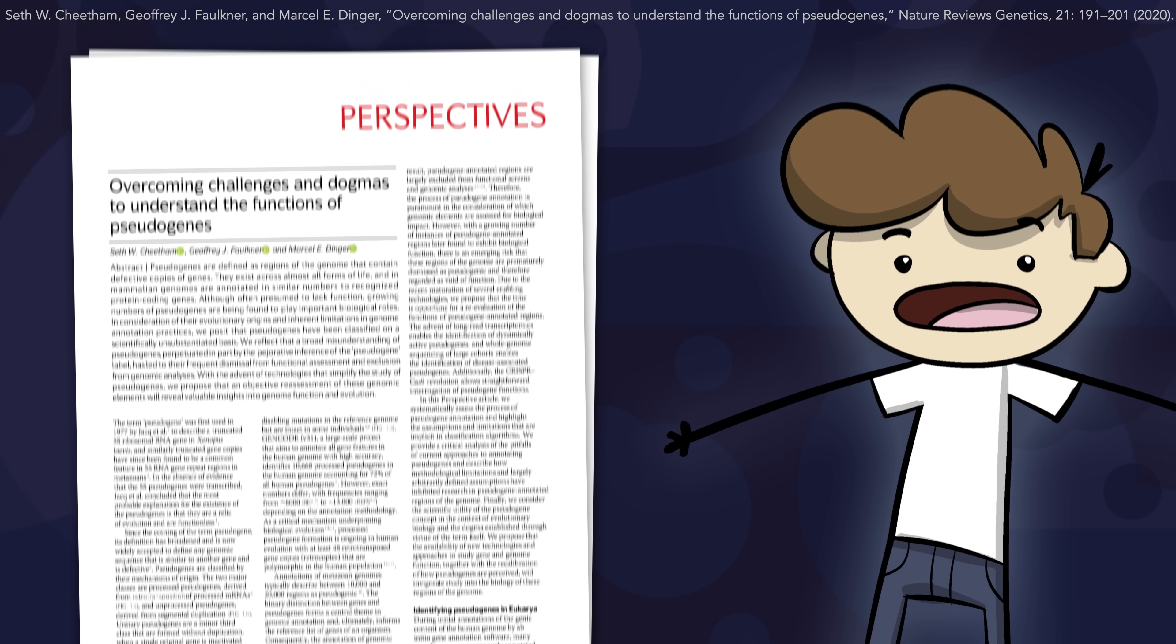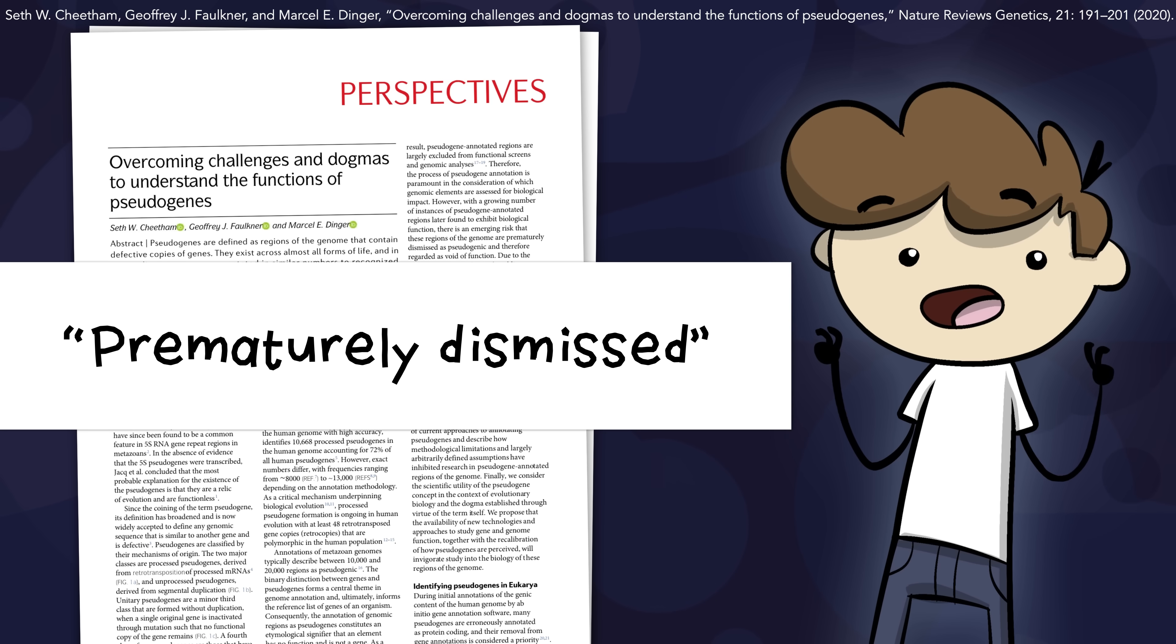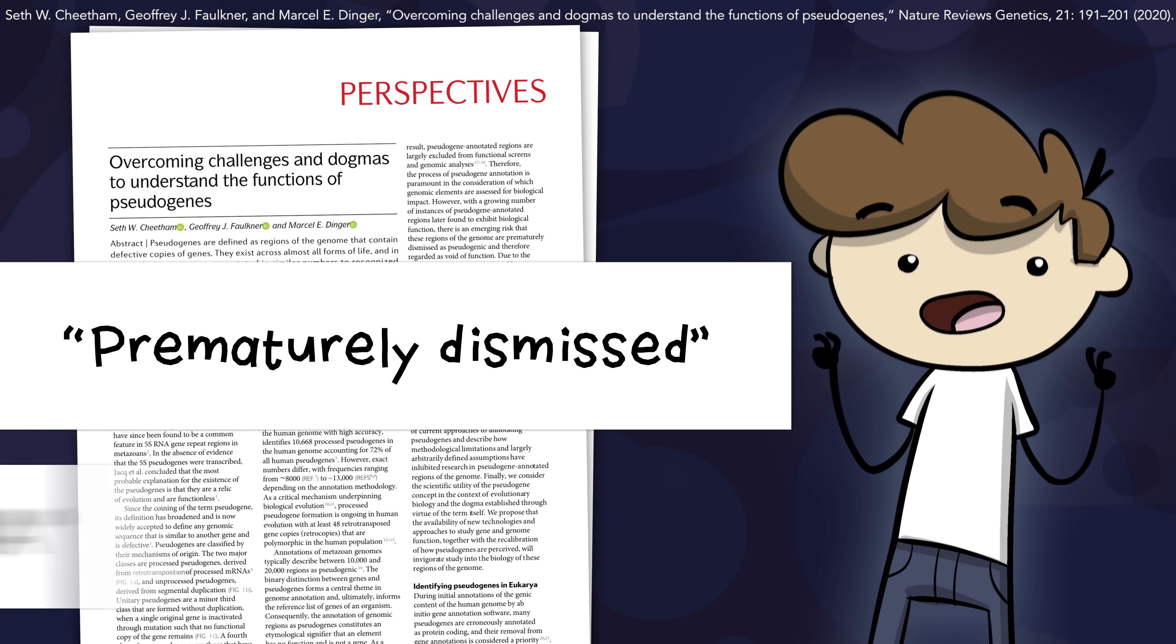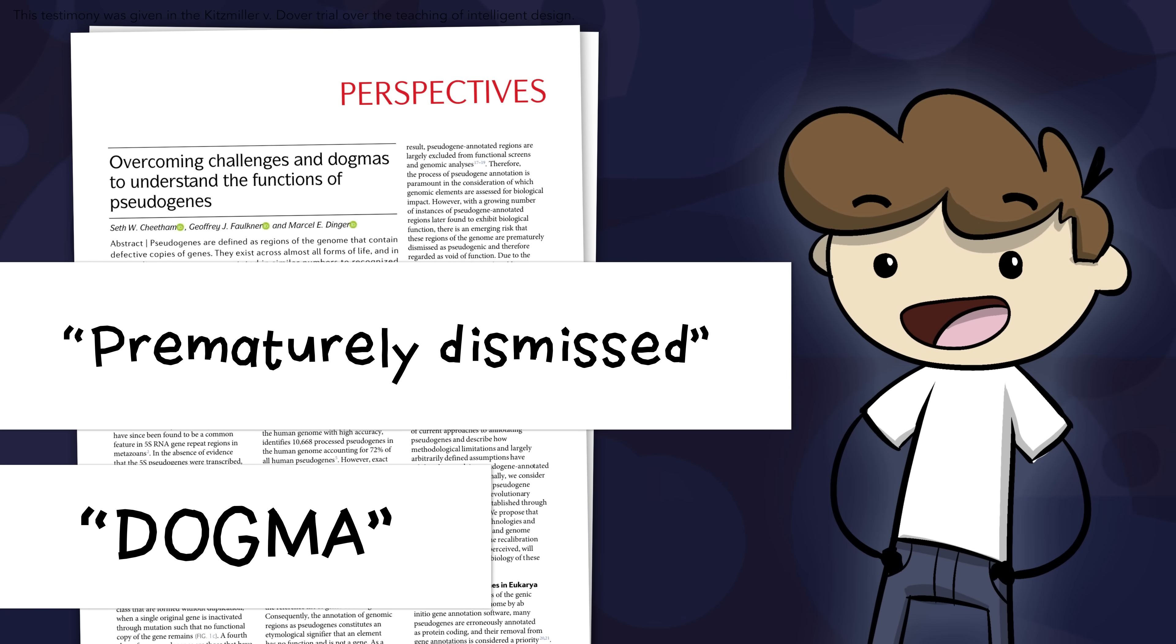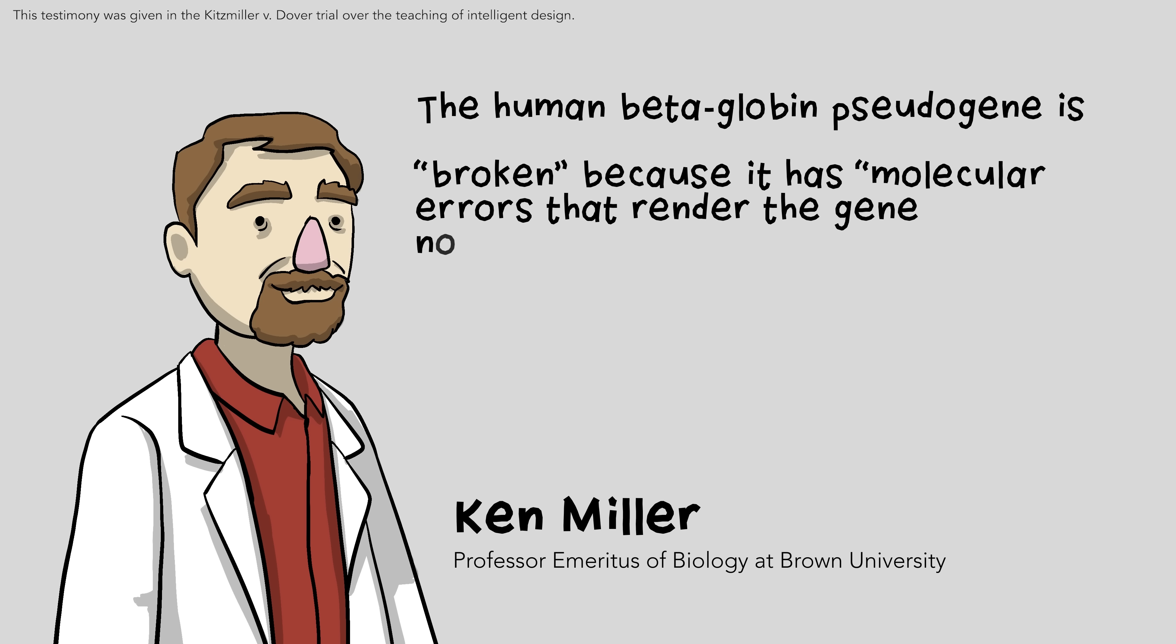Evolutionary scientists totally missed this key function for pseudogenes. This paper cautioned that pseudogene function is prematurely dismissed due to dogma. Here's a famous example. Brown University biologist and ID critic Kenneth Miller testified in a court trial that the human beta-globin pseudogene is broken because it has molecular errors that render the gene non-functional, indicating humans share a common ancestor with apes.